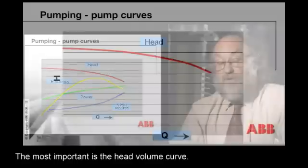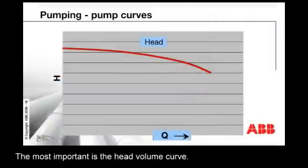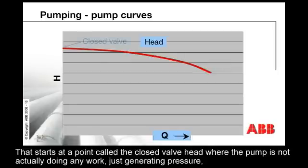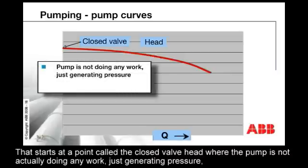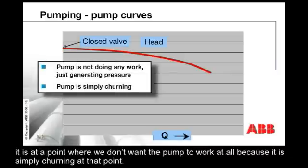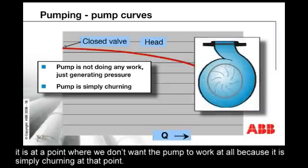The most important is the head volume curve. That starts at a point called the closed valve head where the pump is not actually doing any work, just generating pressure. It's a point where we don't want the pump to work at all because it's simply churning at that point.